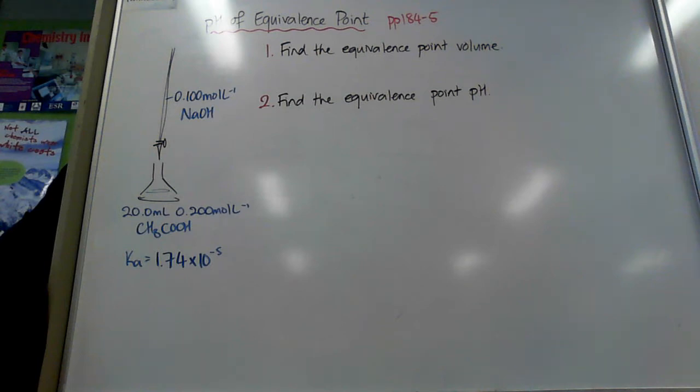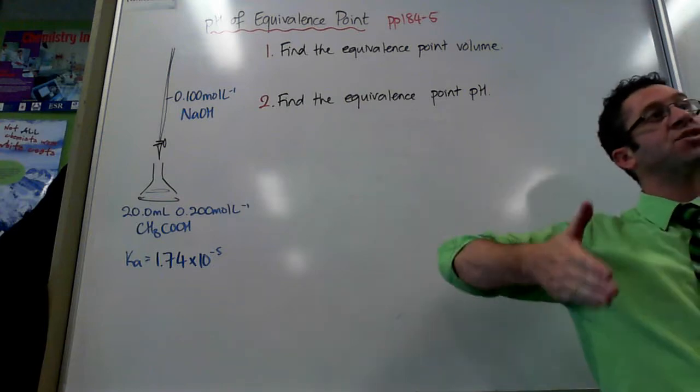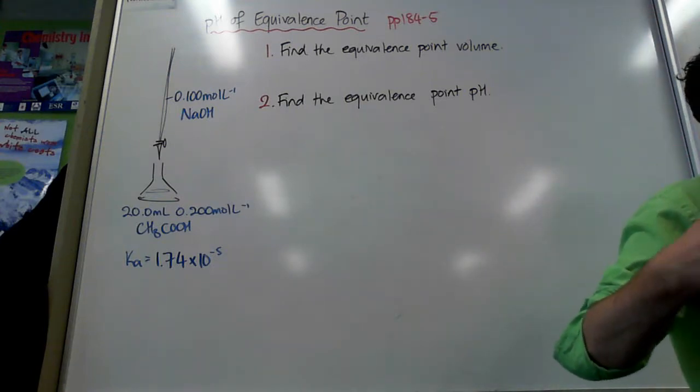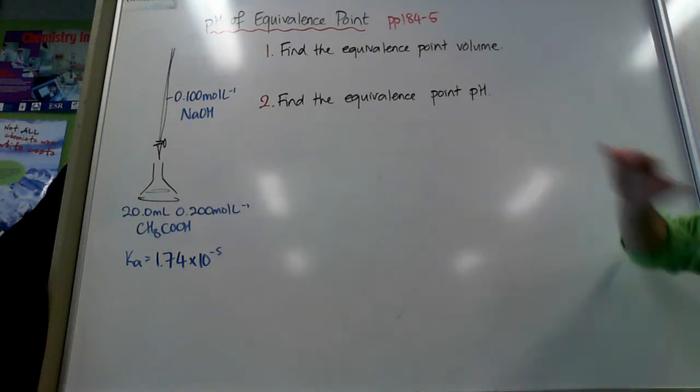One of the most challenging parts of working with titrations and titration curves is trying to find information about the equivalence point. We really need to know a lot about the equivalence point because knowing the equivalence point pH helps us choose an indicator. We need to choose an indicator which has a pKa in the steepest part of our titration curve.